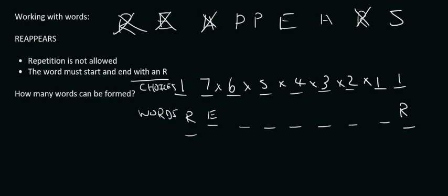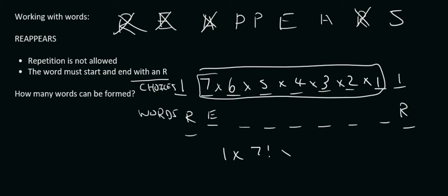So the first way to do this would just be to say 1 times - now this whole part here is just going to be 7 factorial, and then this one over here we'll put at the end. Then what you must divide by is anything that is repeating, but you don't have to look at the stuff that you've already used. So you already used the R and the R, so you ignore those.